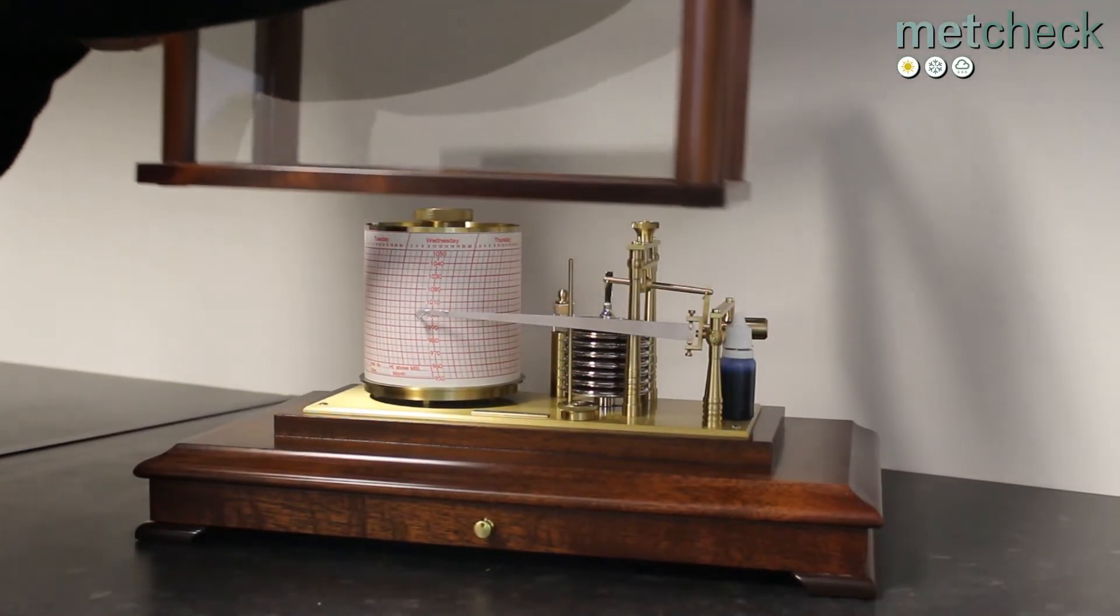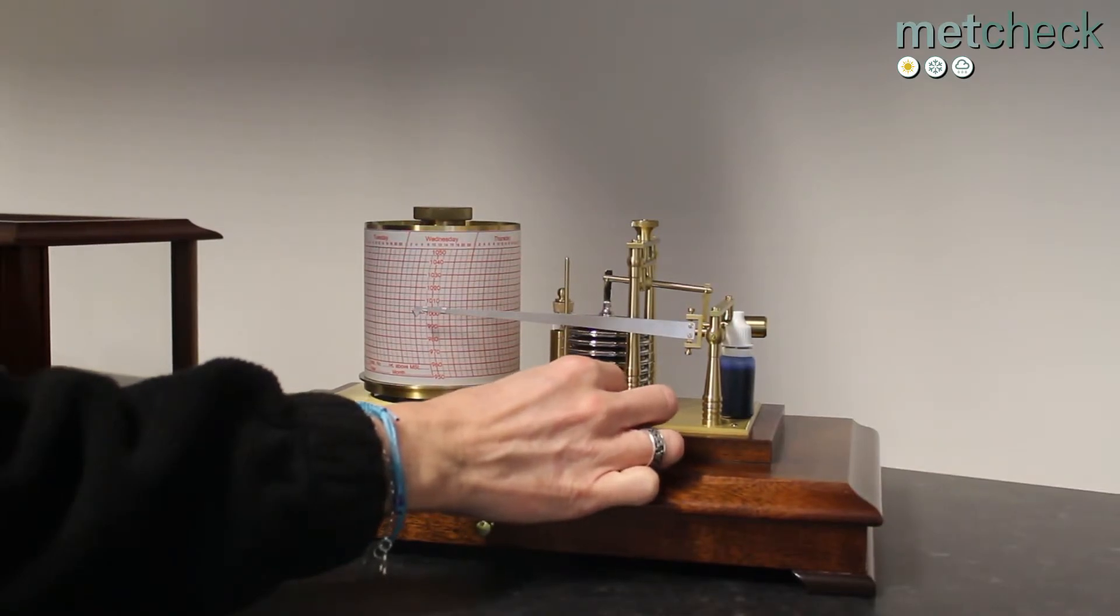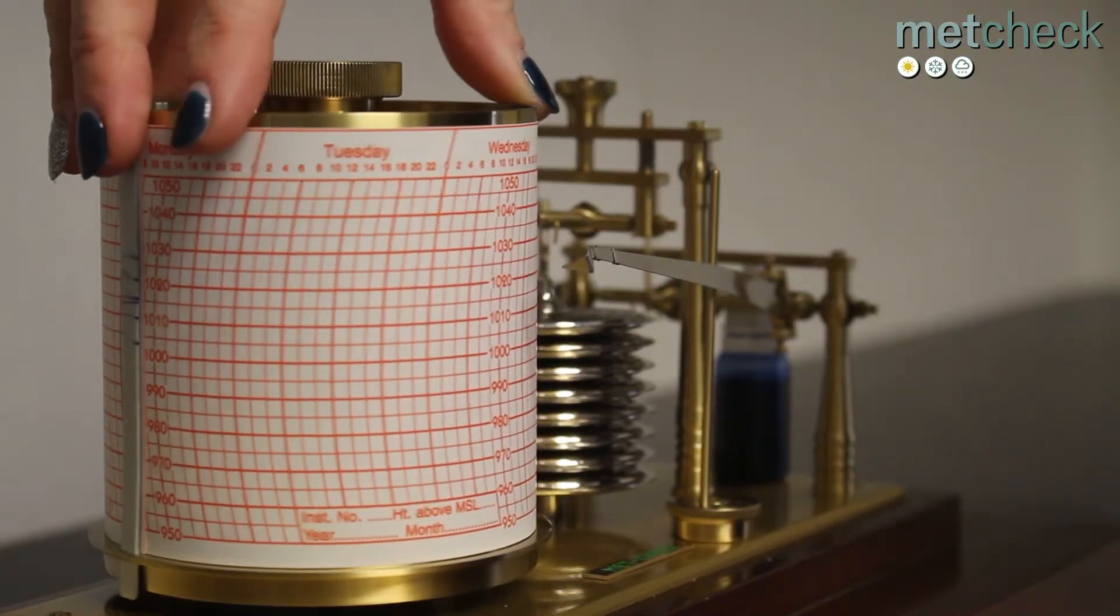Remove the lid from the barograph and place it in a safe place. Using the twist arm, move the arm slightly away from the barograph chart.